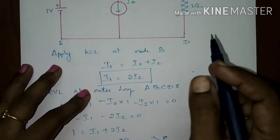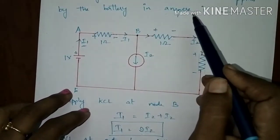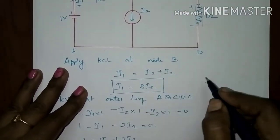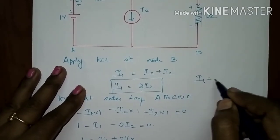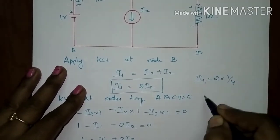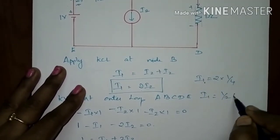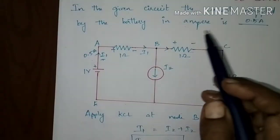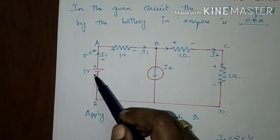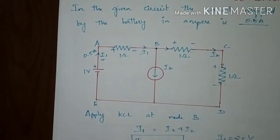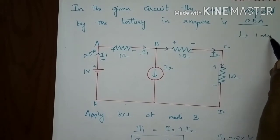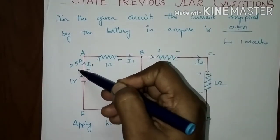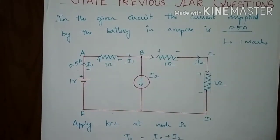Now we have to find the current supplied by the battery, which is i1 in the figure. The relationship between i2 and i1 is i1 equals 2 times i2, so i1 equals 2 times 1/4, giving i1 equals 1/2 ampere, that is 0.5 ampere. This is the value delivered by the battery. This question was asked for one mark in GATE.